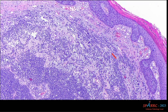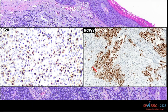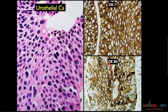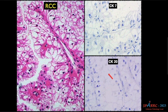Merkel cell tumor of the dermis shows small blue cells with dot-like cytoplasmic positivity for CK20, which is classic. Merkel cell tumor is caused by Merkel cell polyomavirus, and a nuclear positive marker for this virus clinches the diagnosis. Urothelial carcinoma is positive for both CK7 and CK20. Renal cell carcinoma is negative for both CK7 and CK20. Key examples to remember: CK7 positive — lung, breast; CK20 positive — colon; both positive — urothelial carcinoma; both negative — renal cell carcinoma.